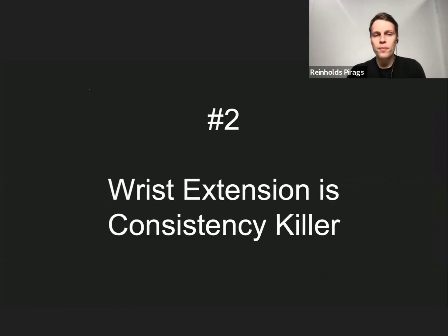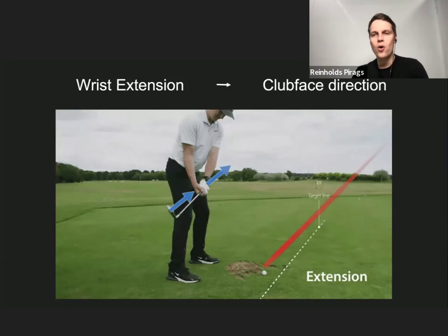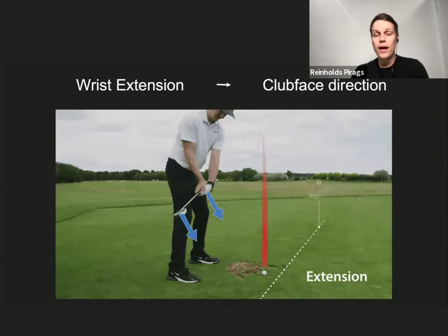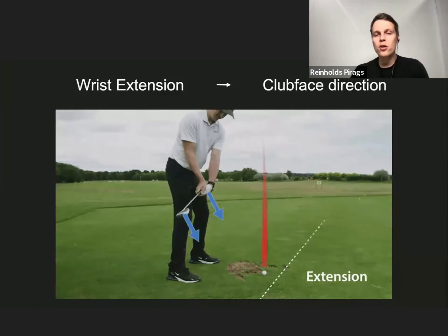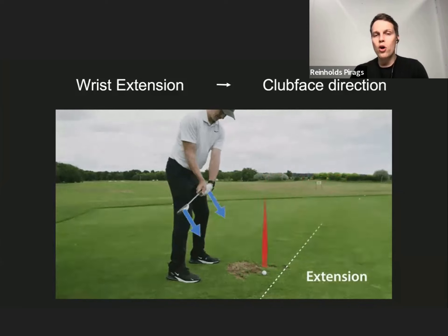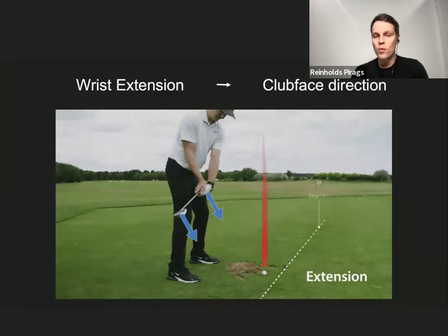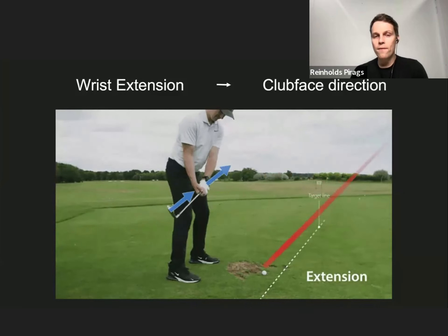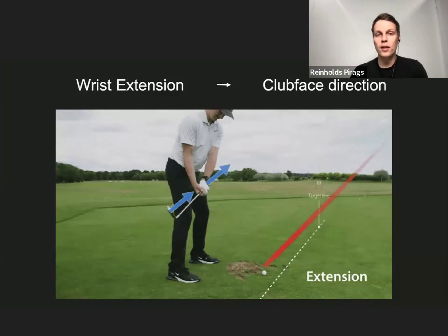Number two is finding how wrist extension is a consistency killer. It's important to understand how wrist extension and flexion are linked to the clubface — they essentially determine the clubface direction. The more extension, or cupping, you have, the more open the face is and the ball goes right. The more flexion you have, the more closed the face is and it goes left of target.